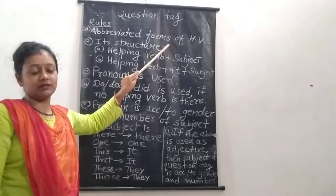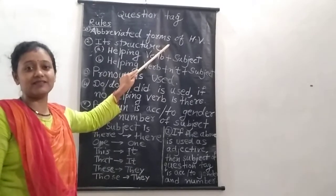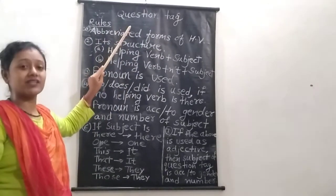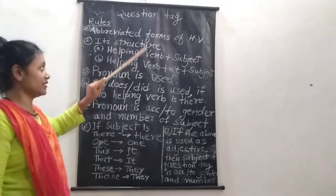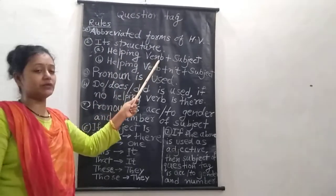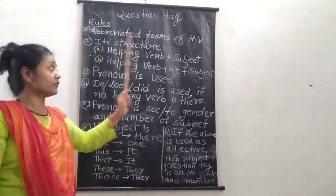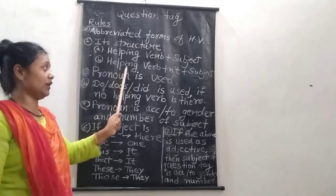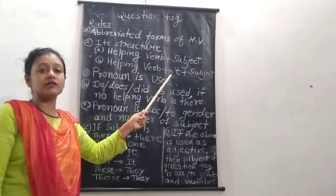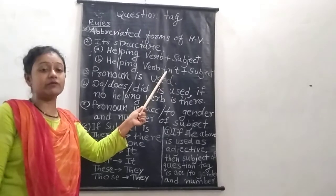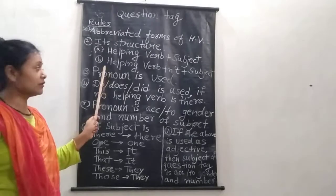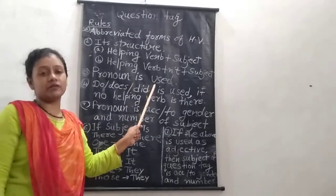For example, 'is not' is written as 'isn't'; 'do not' as 'don't'; 'did not' as 'didn't', etc. The structure is: helping verb plus subject. The second structure is: helping verb plus 'not' in abbreviated form plus subject.